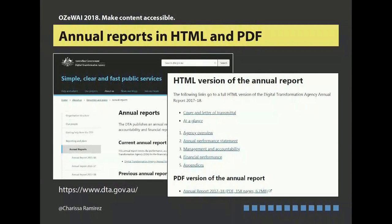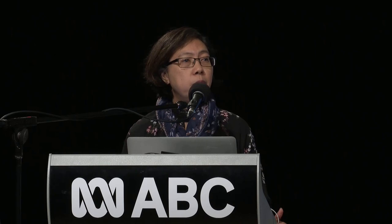Much better — they put the whole report online. So you get the HTML version if you want to use it, or you can get the PDF if you want to download it. Then you download the PDF and the PDF is accessible. This is an example from the DTA, the Digital Transformation Agency website — of course, they have to make it accessible because that's where we benchmark our work.